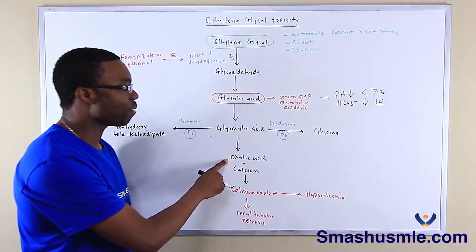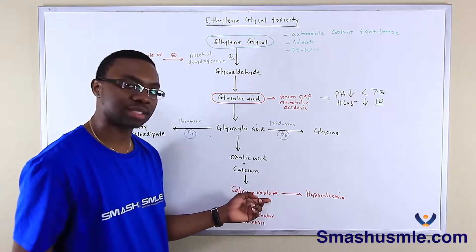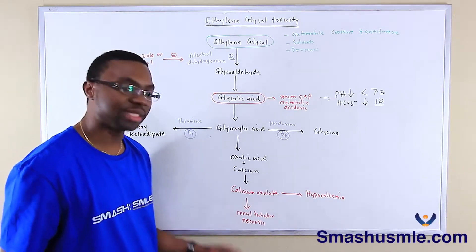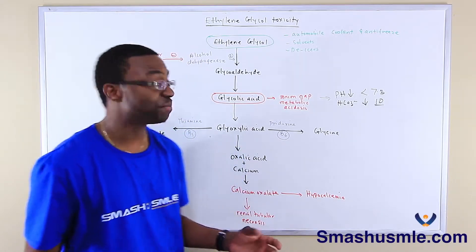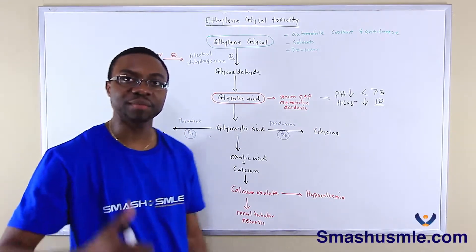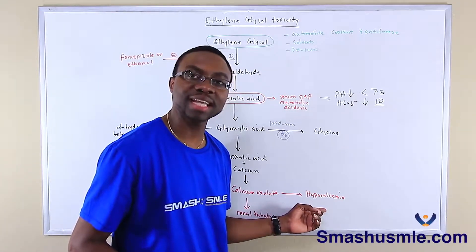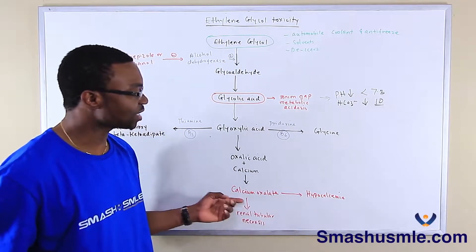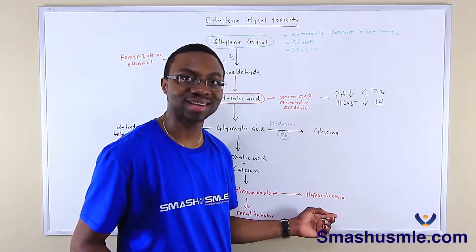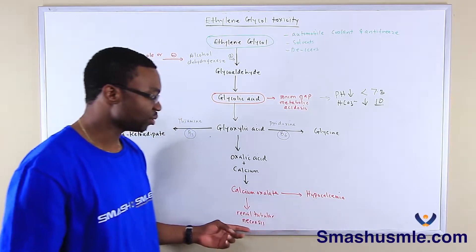Glycoxalic acid is going to form oxalic acid. That oxalic acid is going to bind to calcium inside the bloodstream to form calcium oxalate. This calcium oxalate is going to deposit into the renal tubules to cause renal tubular necrosis — this is what causes renal failure in patients with ethylene glycol toxicity. Not only do they develop acute renal failure, with elevated BUN and creatinine, they also develop hypocalcemia, because all the calcium is being bound by the oxalic acid, dropping calcium concentration in the bloodstream.